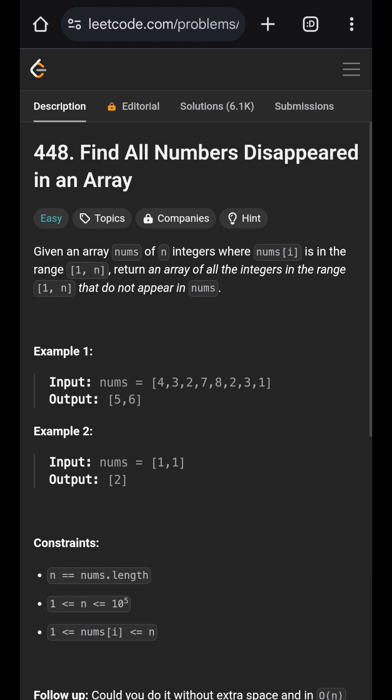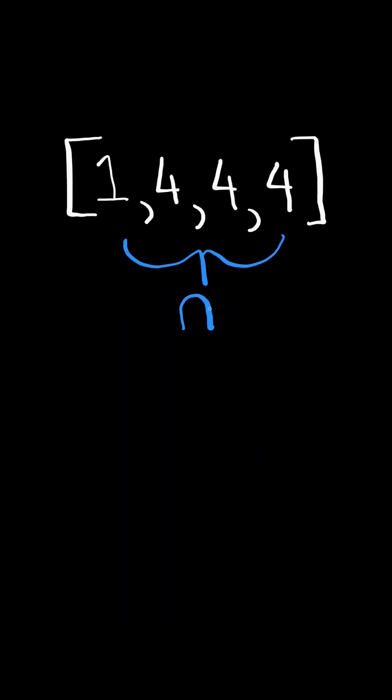Find all numbers disappeared in an array. Given a list of length n, in this case n equals 4.